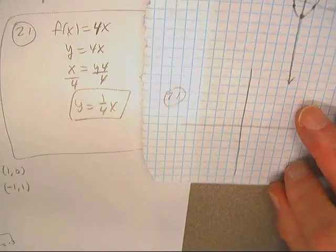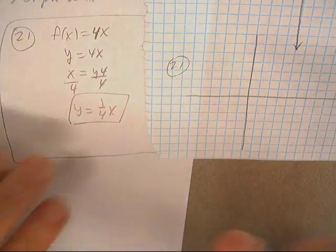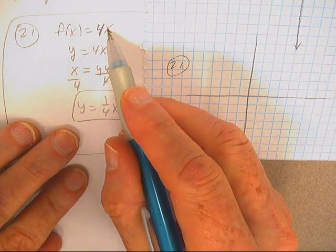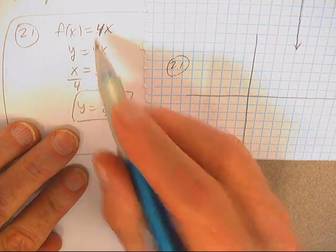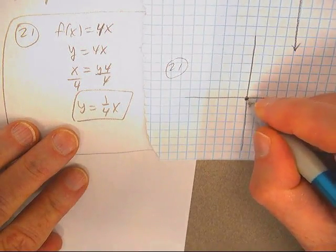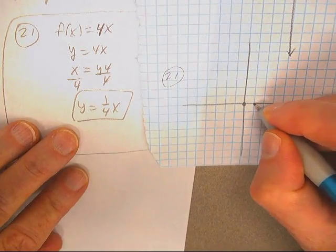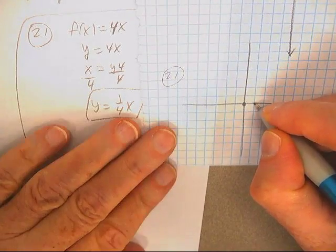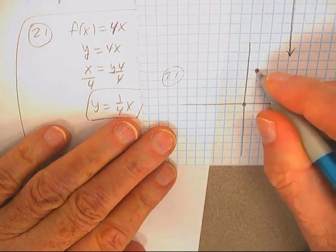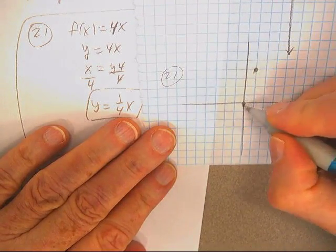And then to graph them — well, if x is 0, y is 0, that's here. If x is 1, y is 4, that's there.